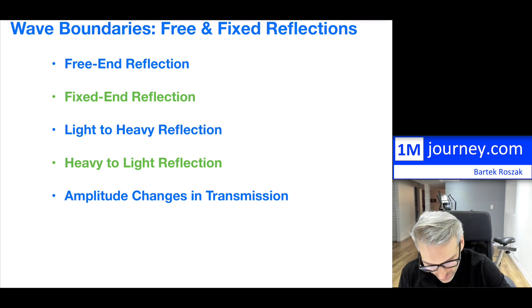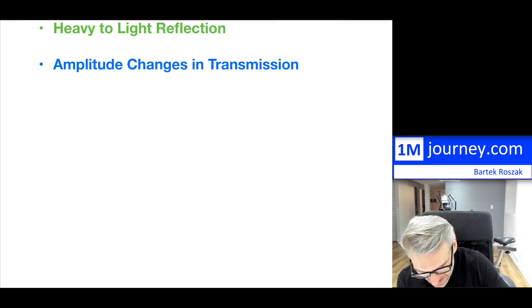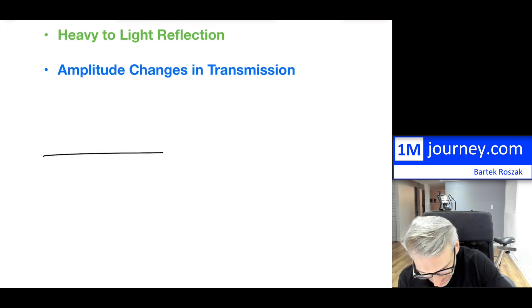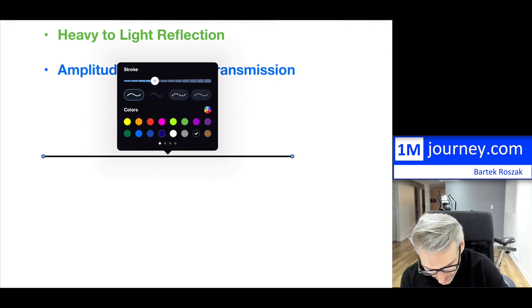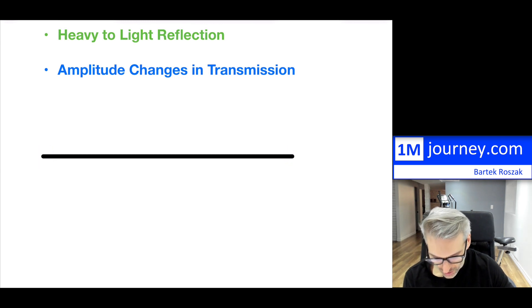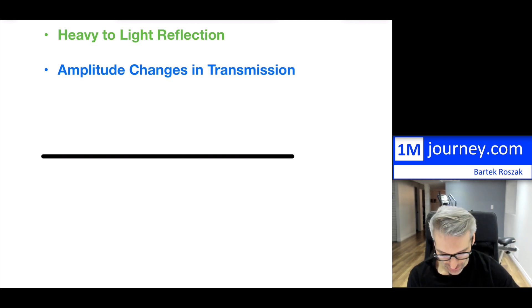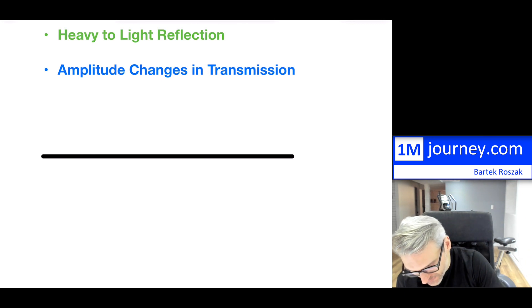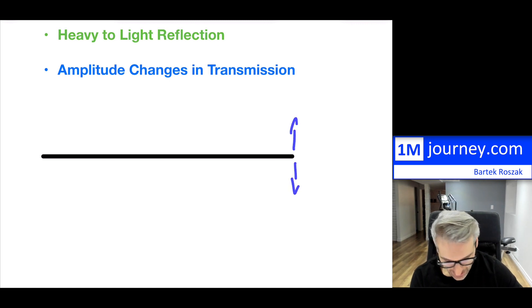So first off, free-end reflections. What does it mean to have a free-end reflection? If you take a string starting at one point and ending at another, these particular ends are not attached and not fixed, so they can freely move up and down any way they like.